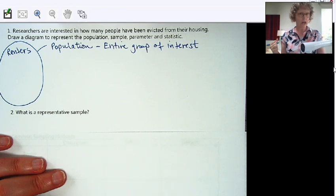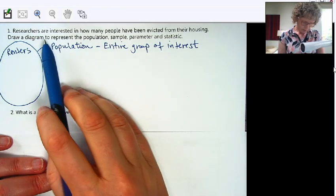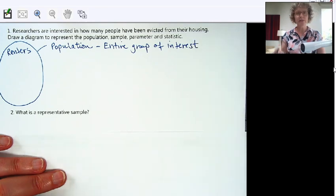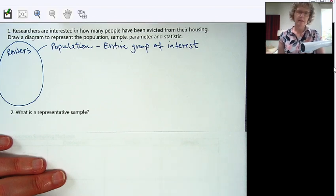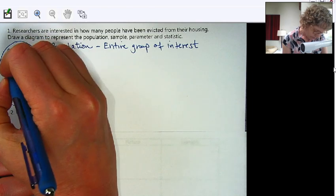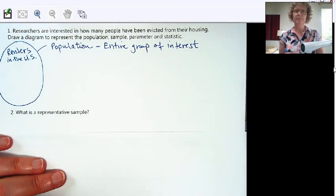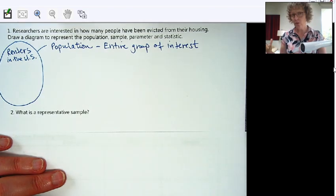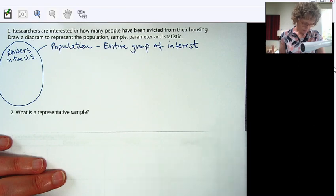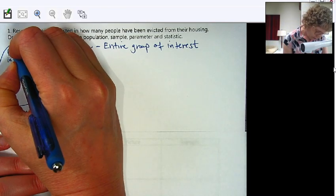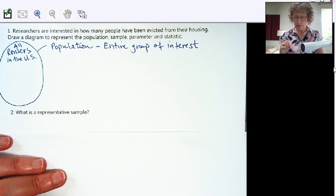So we're looking at renters. And then the question is where? This particular example doesn't specify, but we want to be as specific as possible. Are we interested in renters in Portland? Or in Oregon? Or in the United States? Or another country? Let's just make this the United States for our example here. Okay, so our population would be all renters in the United States.